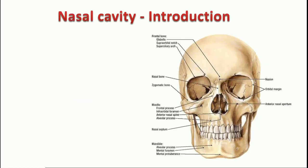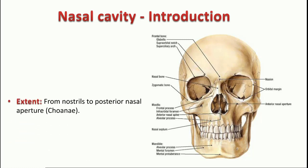Now let us pass on to the nasal cavity. The nasal cavity is divided into two halves by the septum in the midline. However, in most cases the nasal septum is deviated to one side — it is not exactly in the median plane — and thereby it makes both halves asymmetrical.